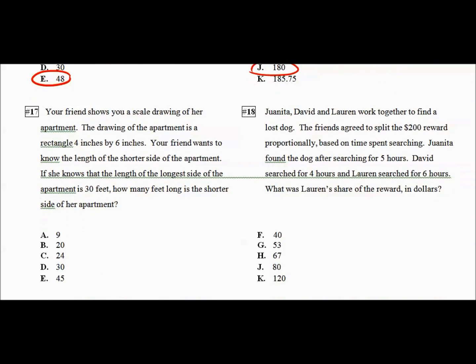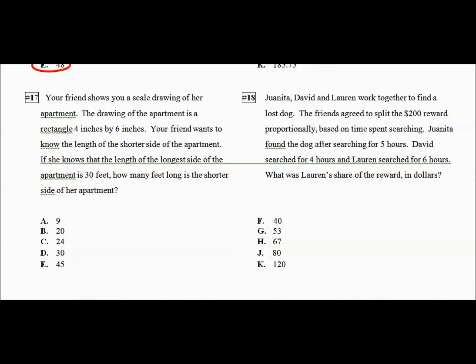Scale drawing of an apartment. Very similar to a proportion problem. We've got this. Then we've got the bigger one, 4 by 6. The longest side of the apartment is 30. X. 4 over X equals 6 over 30. 5 times 6 is 30. 5 times 4 is 20.